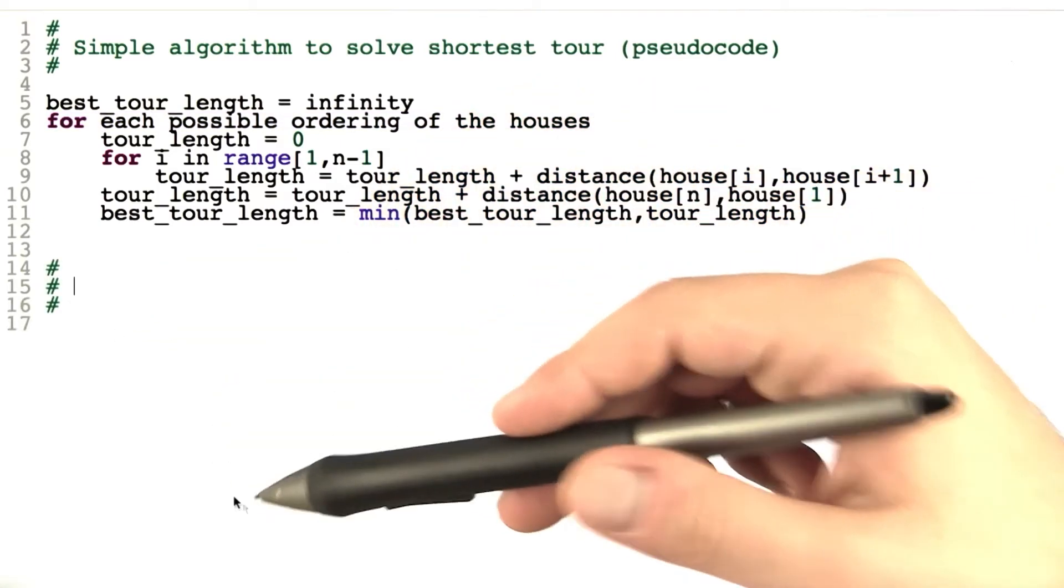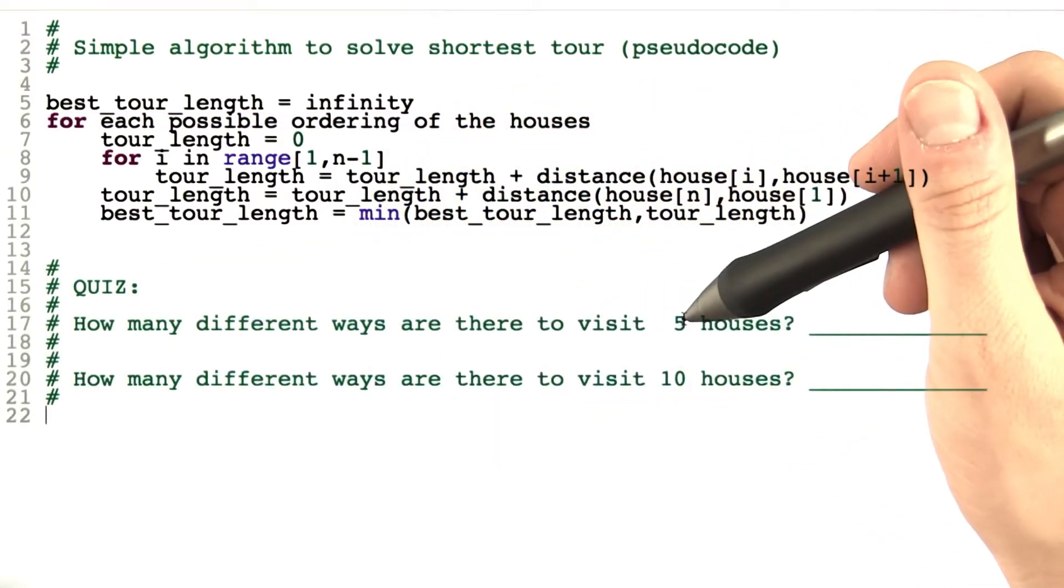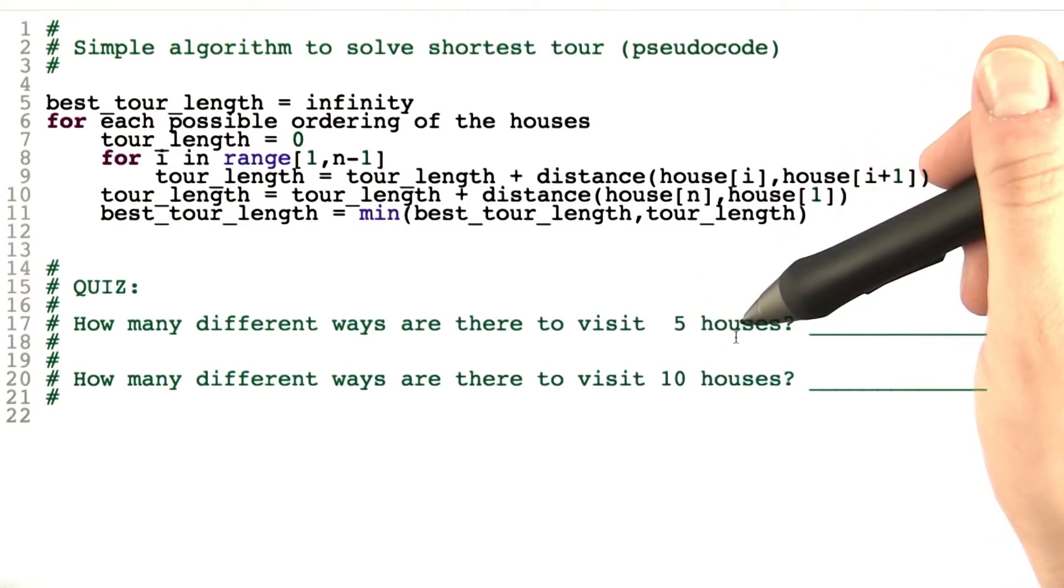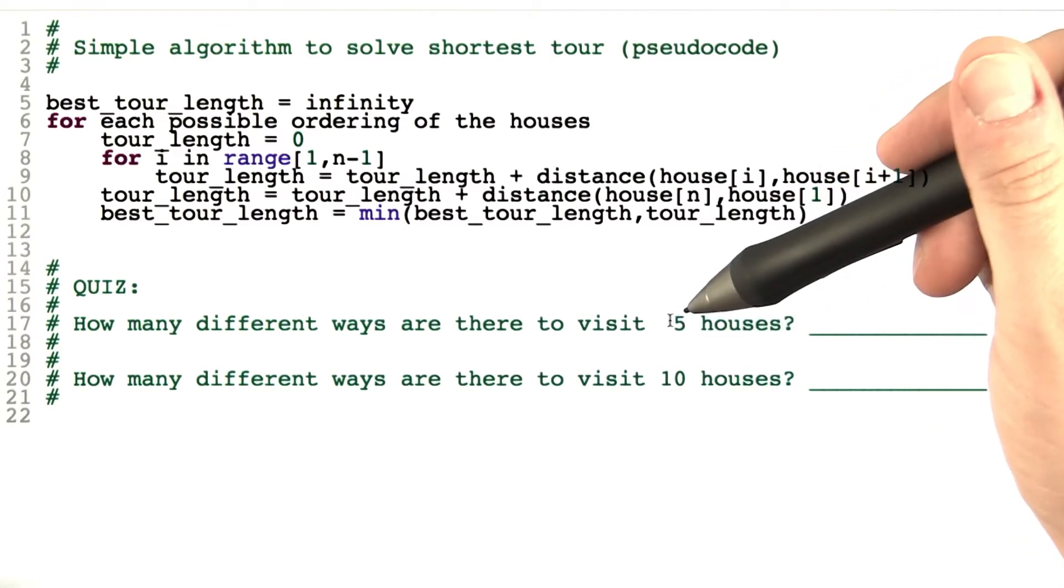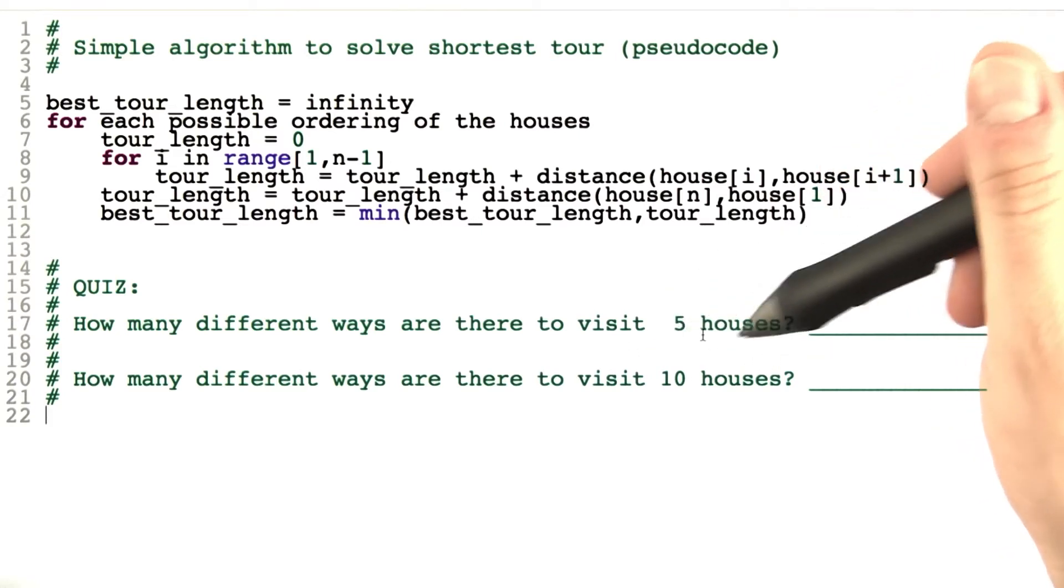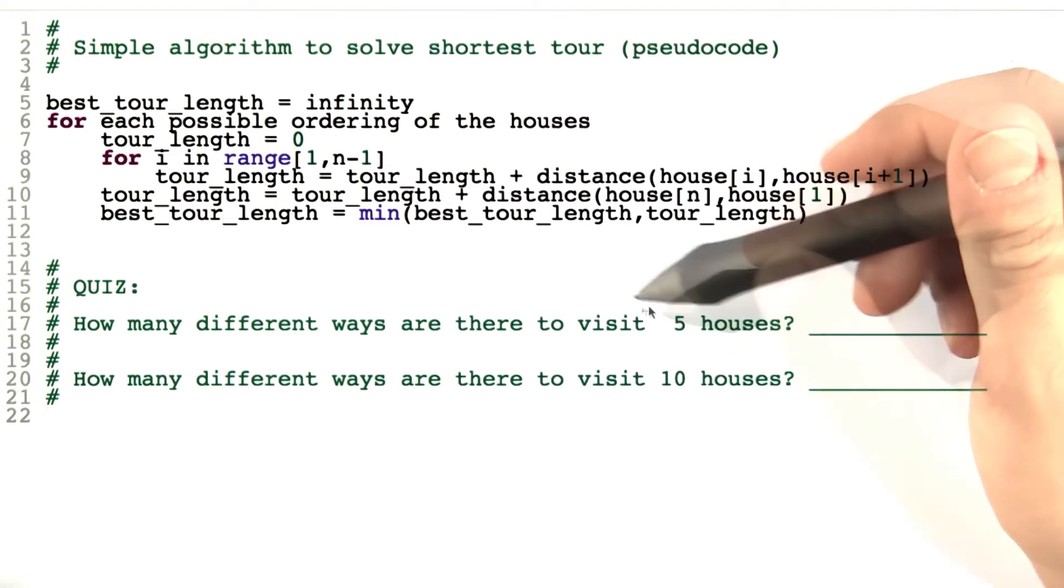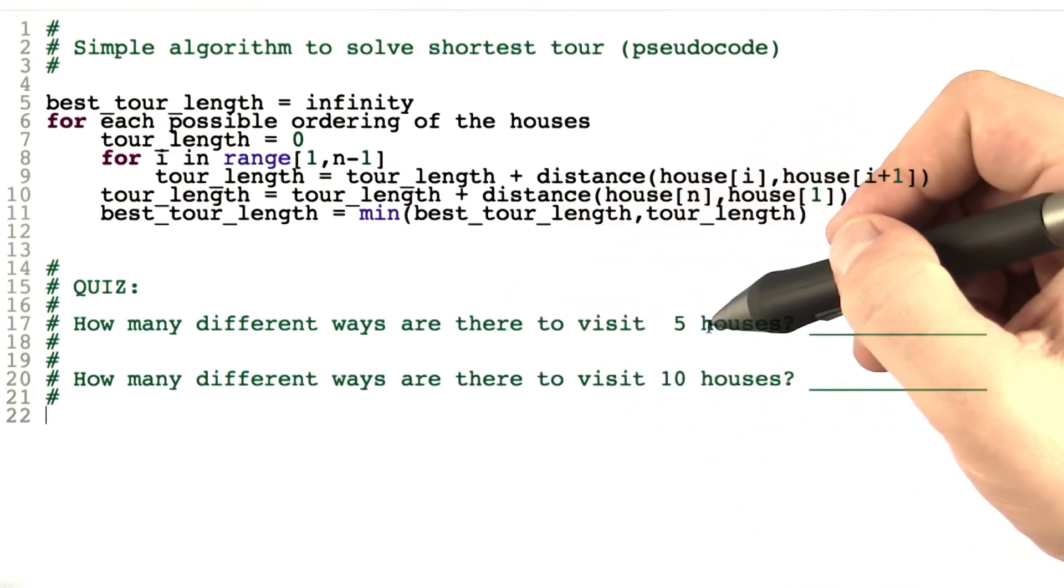So let's do a little quiz to make this more explicit. What I would like you to tell me is if we had five houses to visit, not counting the base where we start from and get back to, but five houses where we can decide in which order to visit them, how many different ways are there to visit five houses.